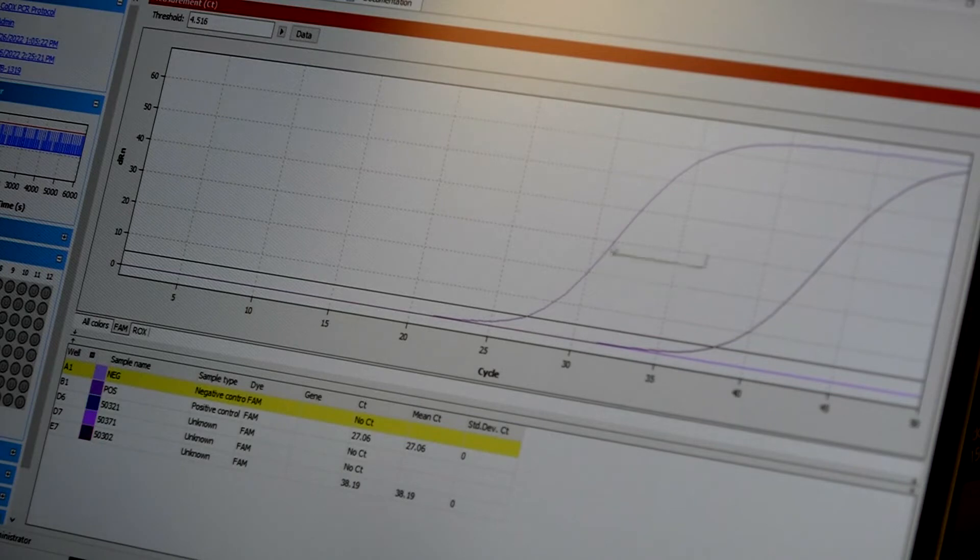This is our control well to make sure that we do show that it is positive for COVID. And then this patient is also positive. The negative patient will be down here making this a flat line because we don't find anything.